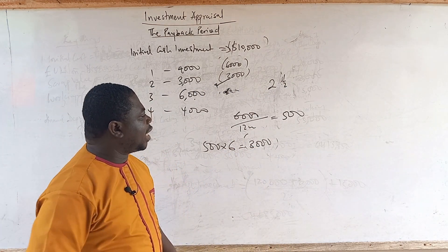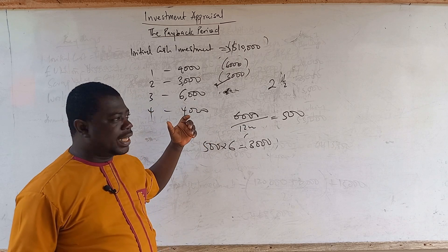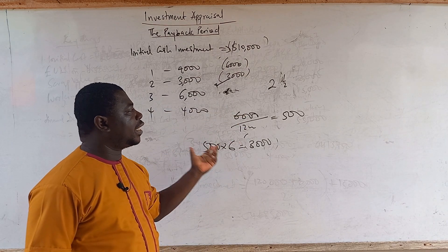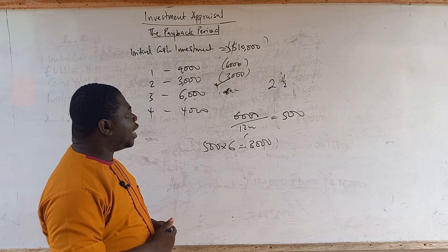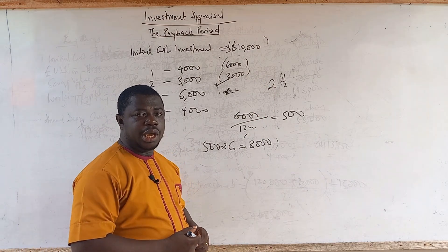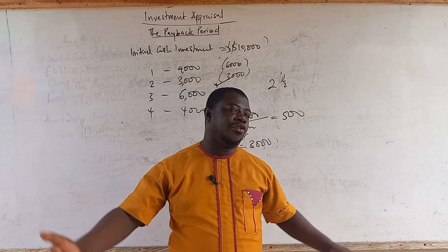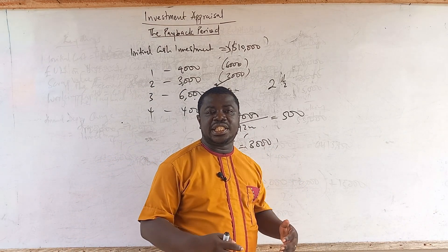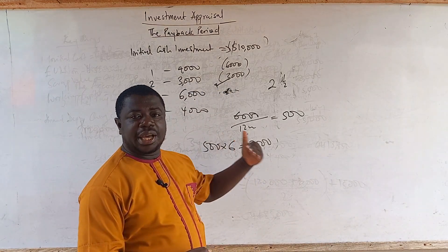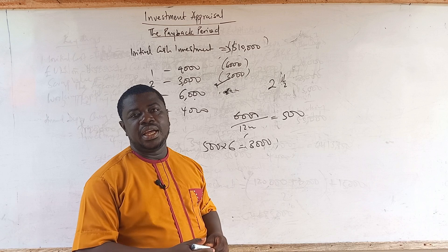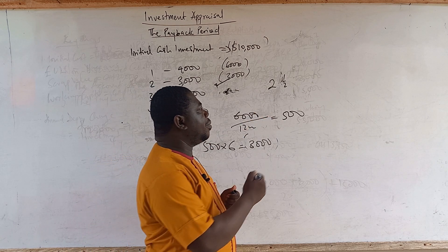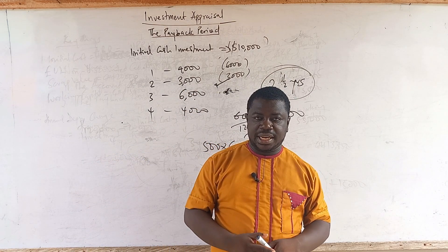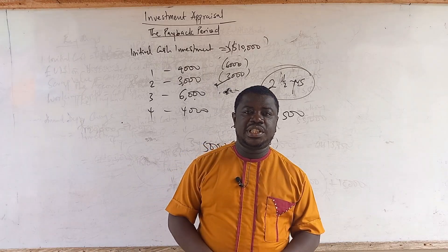It is not always that the payback period will be in exact years. I am going to teach you a simple way of getting it when the investment is not recovered exactly at the end of the year, just as I have done. We will solve a question and look at how to calculate the years, decimals, or fractions to attach, because the investment could be recouped in the middle of a year and not necessarily at the end.